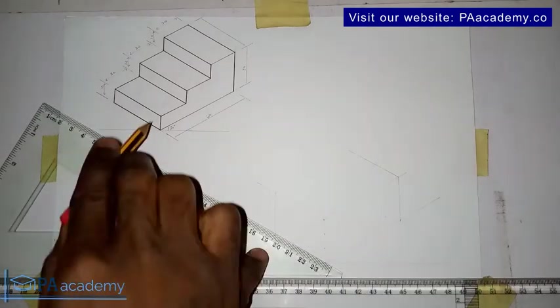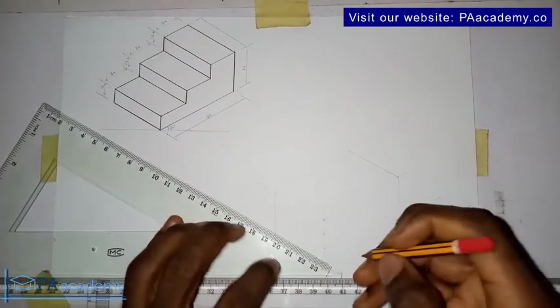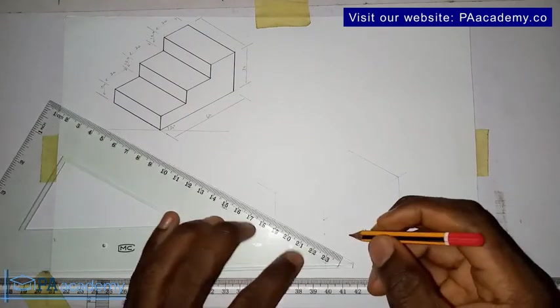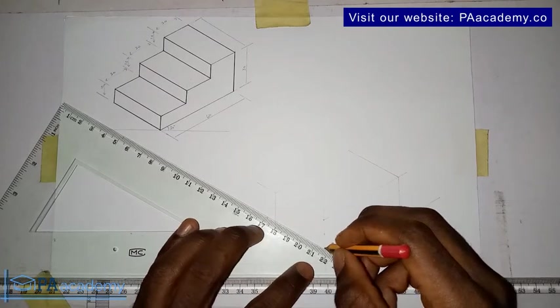Now I want to draw this line from here to here. Since we've measured from this point to this point to be 10mm, you can go ahead to draw this line.